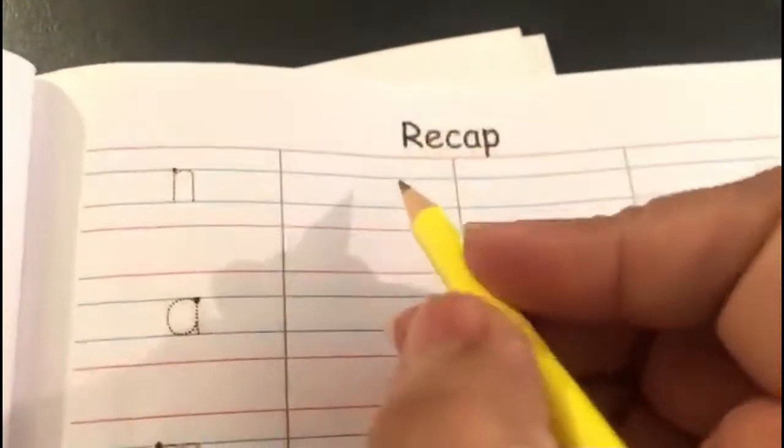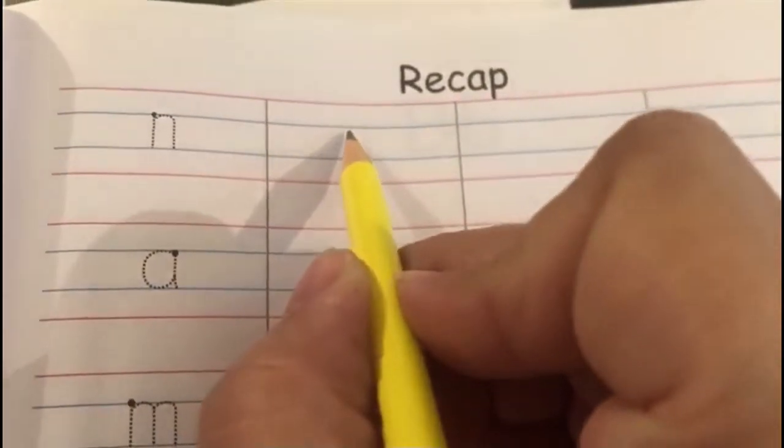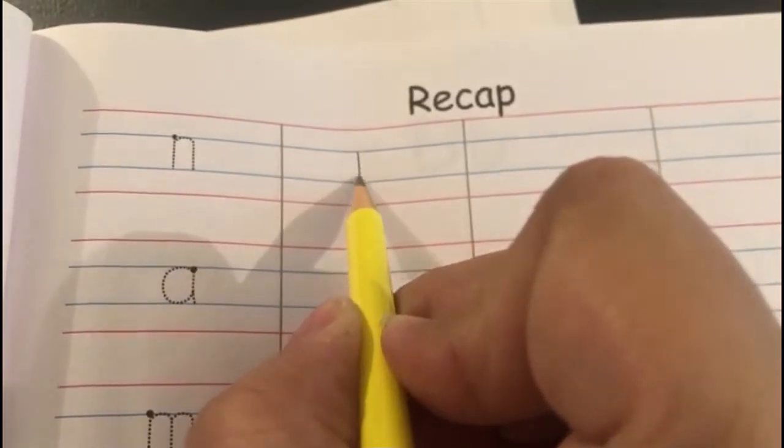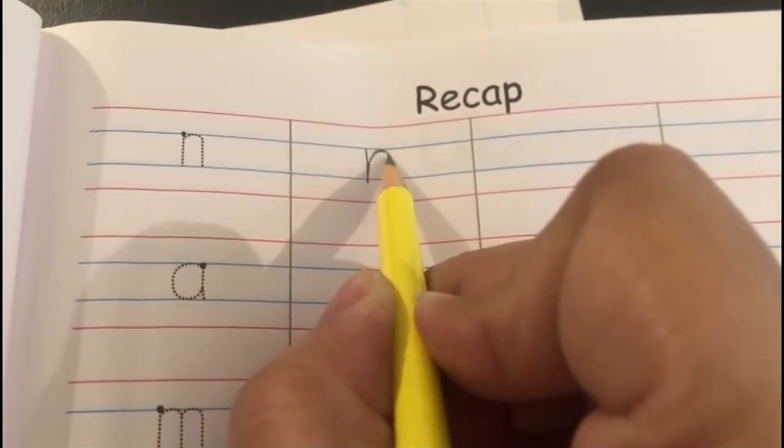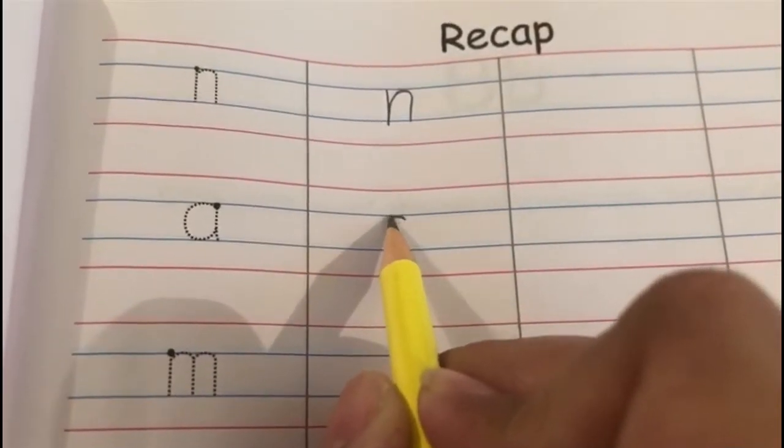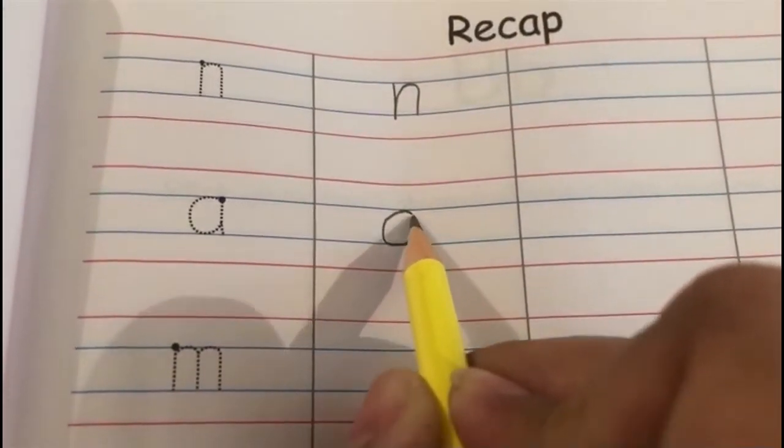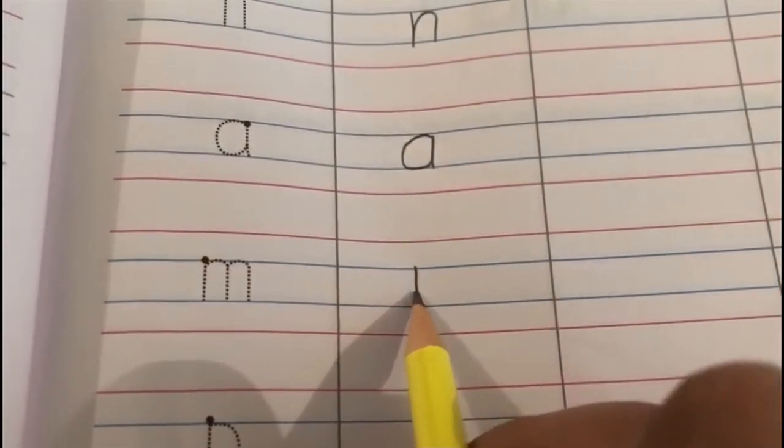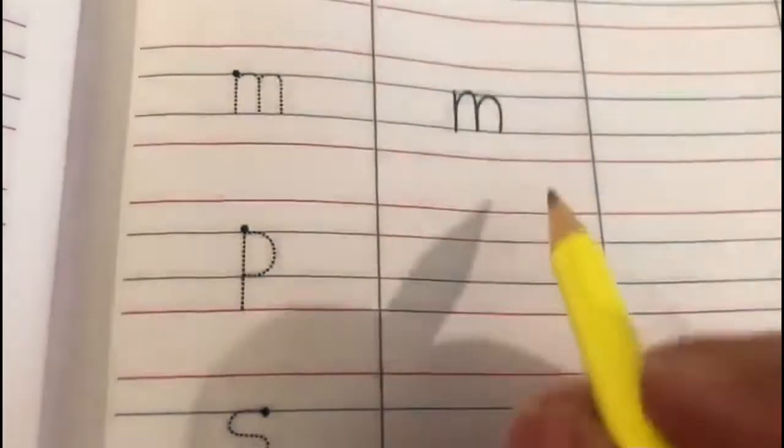First is n, so come on let's write n: standing line up, bumper-t, n. Then a: start from the blue line, go round, go up, go down, a. Then m: start from blue line, go down, up, bumper-t, bumper-t. Then p: blue line to bottom red line, standing line and a bumper-t, p.